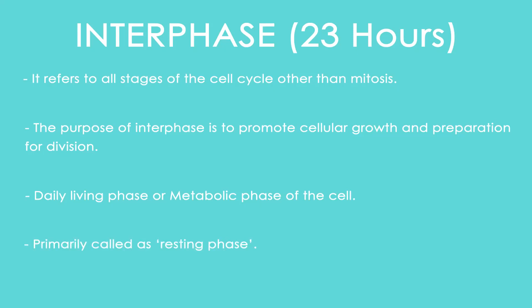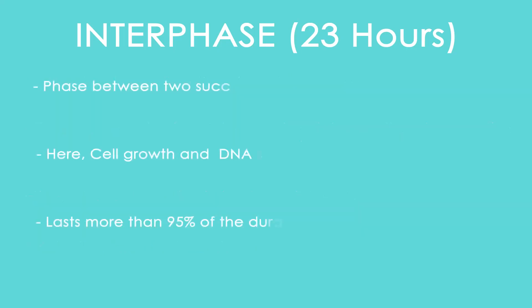During interphase, cellular organelles double in number, DNA replicates, and protein synthesis occurs. The chromosomes are not visible, and the DNA appears as uncoiled chromatin fiber. In eukaryotes, there are two distinct types of cell division: vegetative or equational division, where each daughter cell is genetically identical to the parent cell — called mitosis — and reproductive or reductional division, where chromosome number is halved to produce haploid gametes — called meiosis.